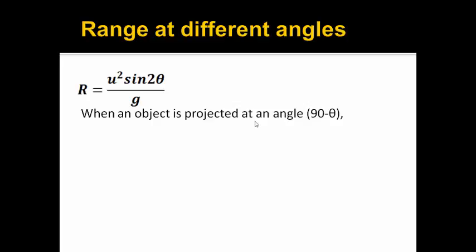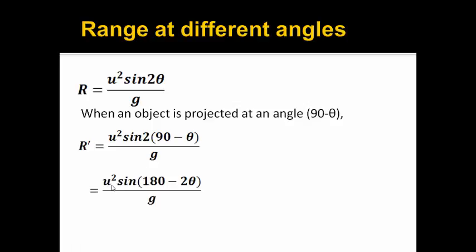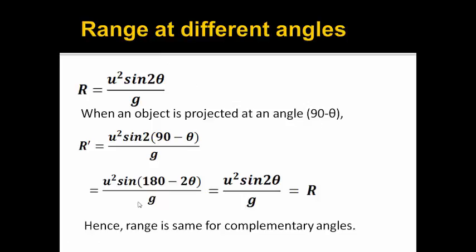When an object is projected at an angle (90 - θ), let that range be denoted by R', given by u² sin2(90 - θ) / g. Simplifying it we get u² sin(180 - 2θ) / g. We know that sin(180 - any angle) will be nothing but sine itself, hence that will be equal to u² sin2θ / g. And that is nothing but range at angle θ. Hence we can say that range is same for complementary angles.